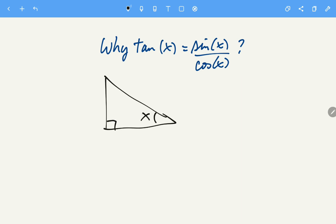And let's define an angle x here. So for this angle x, the hypotenuse is right here, the opposite and the adjacent. So for our x angle, let's define sine of x equals the opposite divided by the hypotenuse.